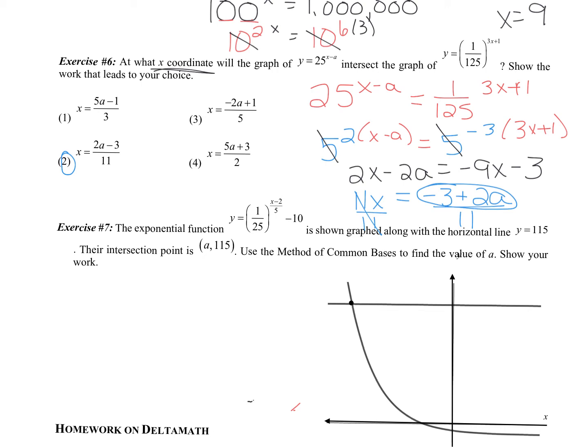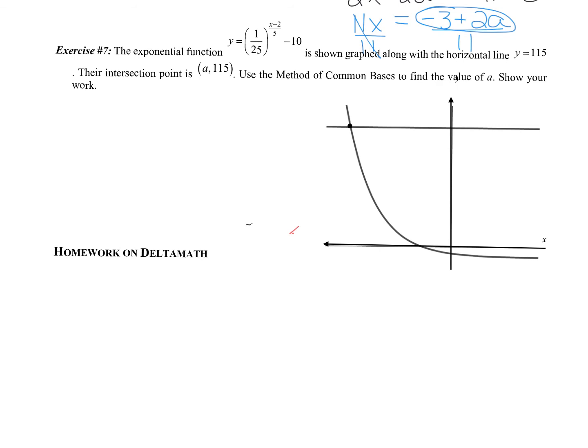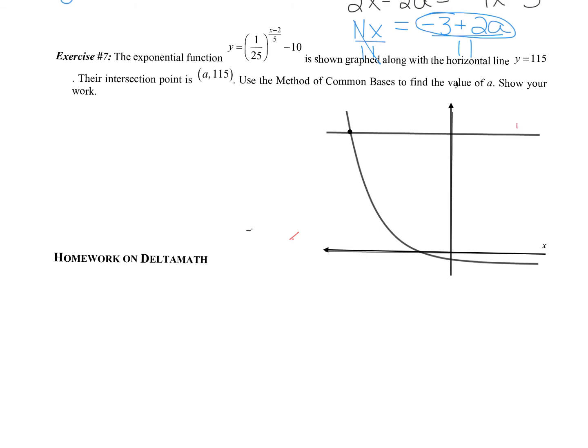And our last one is also related to graphing. It says the exponential function y equals 1 over 25 to the x minus 2 over 5 minus 10 is shown graphed along with a horizontal line y equals 115. This is just to kind of connect this y equals 115 and this one is y equals 1 over 25 to the x minus 2 over 5 minus 10. And we are trying to find this intersection point. Since the point lies on the line y equals 115, we know the y has to be 115 and we're trying to find the x value, which is labeled a.